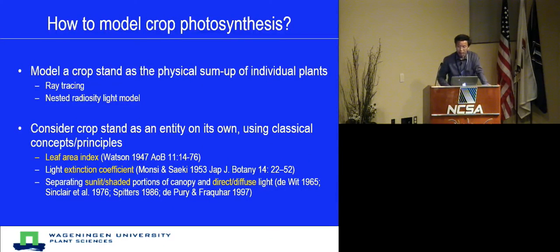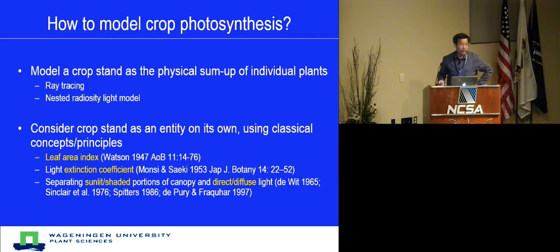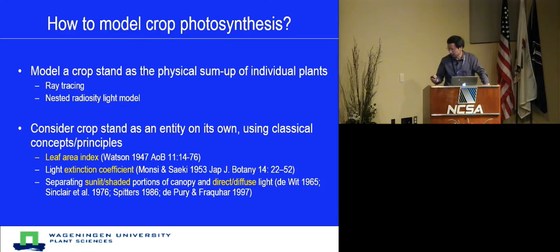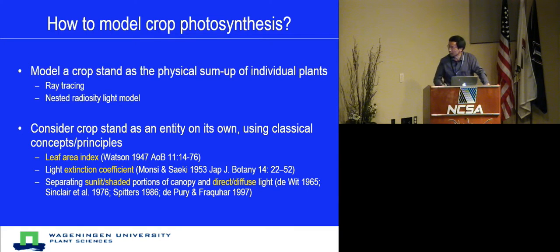The next question is how to model crop photosynthesis, as photosynthesis is a central part of any crop model. The first approach — nicely illustrated in one of the posters yesterday — is to model the crop stand as a physical sum of individual plants, using a regression approach. Most crop modelers use the alternative approach, considering the crop community as an identity on its own, using classical concepts such as the leaf area index, extinction coefficient, separation of sunlit and shaded parts of the canopy, and separation of direct and diffuse light.